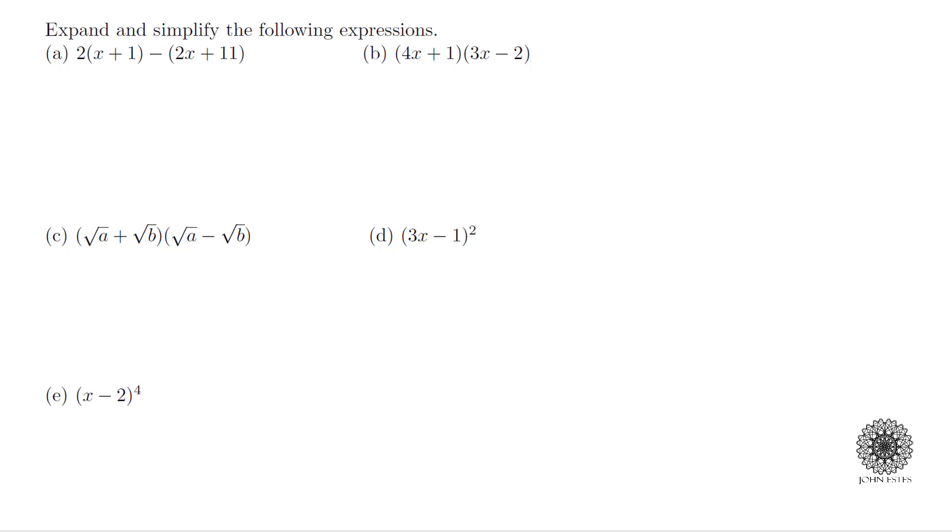For this first one, if I'm trying to simplify it, I need to use the distribution property. So what that means is I'm going to say the 2 distributed across here and the negative 1, that minus, across here. I end up with 2x plus 2, distributing the negative I have minus 2x minus 11. Then I need to bring together my common terms, so the 2x and the negative 2x actually cancel out and I end up with just negative 9.